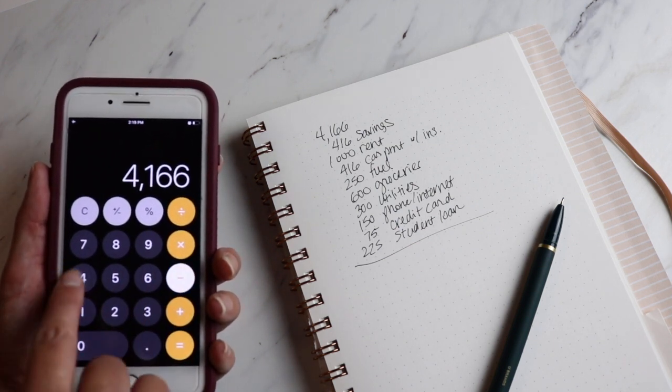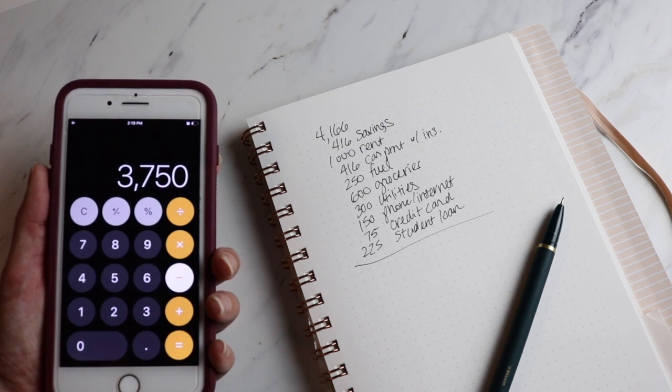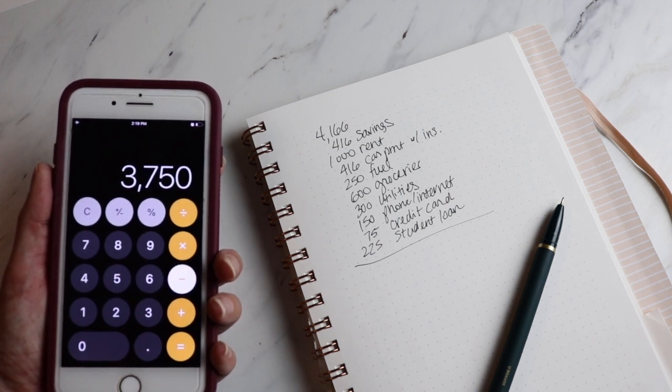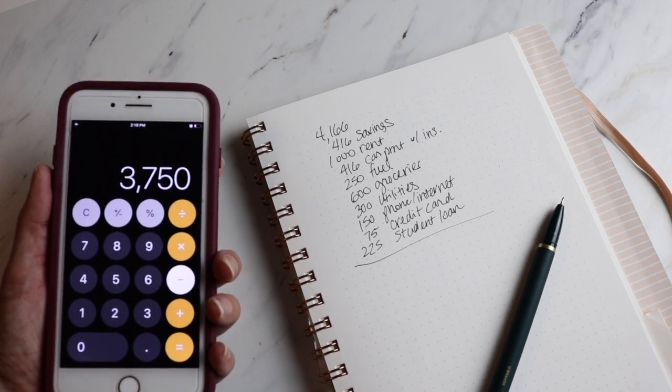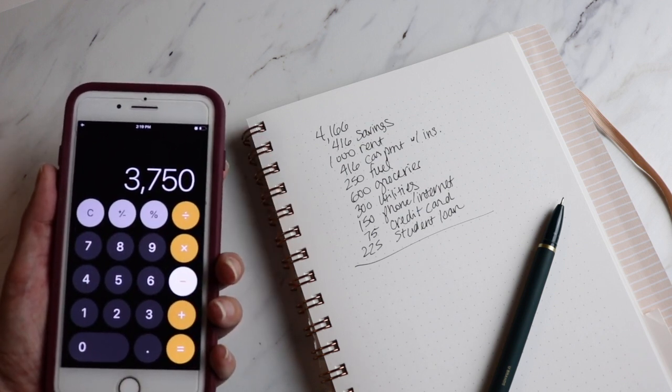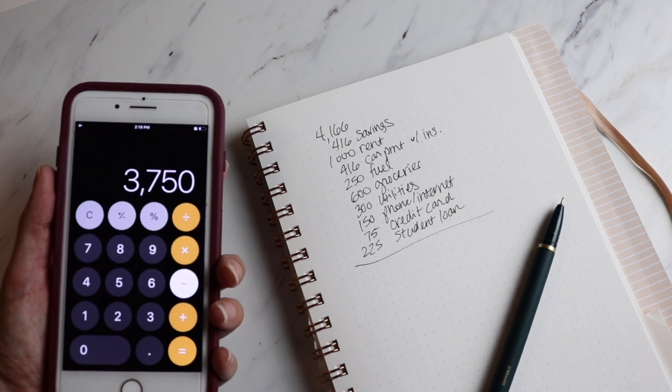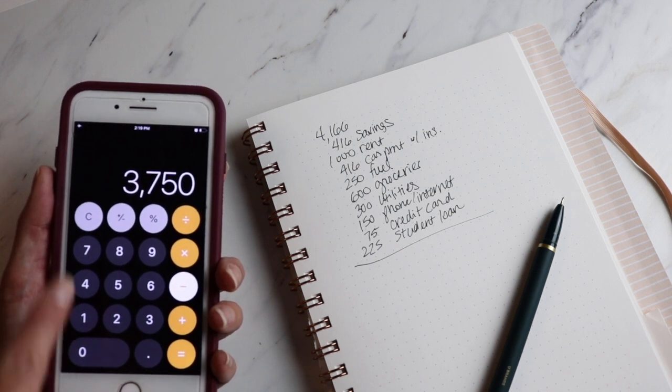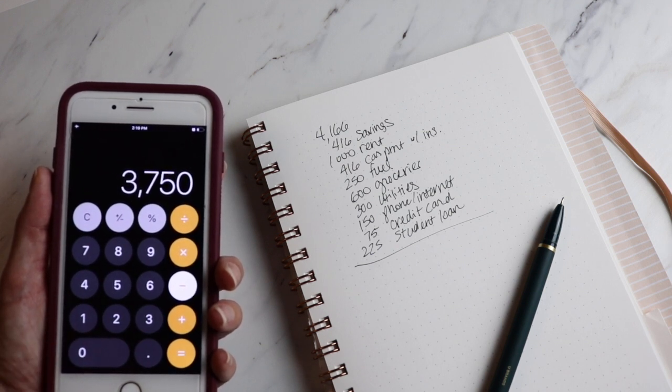$4,166. We're going to take out our savings because we want to save money. Now, if you are a tither, I didn't include tithing on here because not everybody is a tither, but if you're a tither, include your tithe in your budget, obviously.